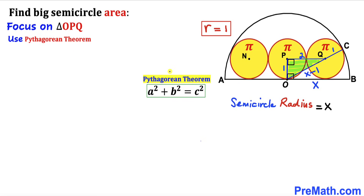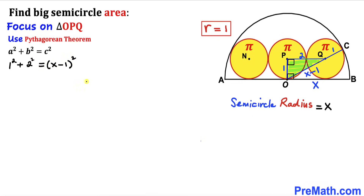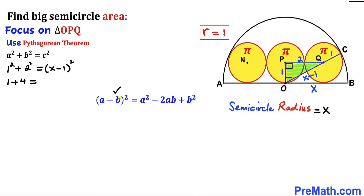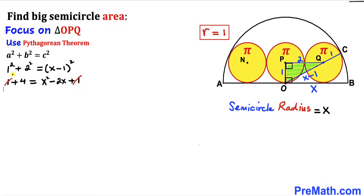Using the Pythagorean theorem a² + b² = c²: a = 1, b = 2, c = x − 1, giving us 1² + 2² = (x − 1)². Simplifying: 1 + 4 = x² − 2x + 1, using the identity (a − b)² = a² − 2ab + b². The 1s cancel, and moving 4 across gives x² − 2x − 4 = 0.